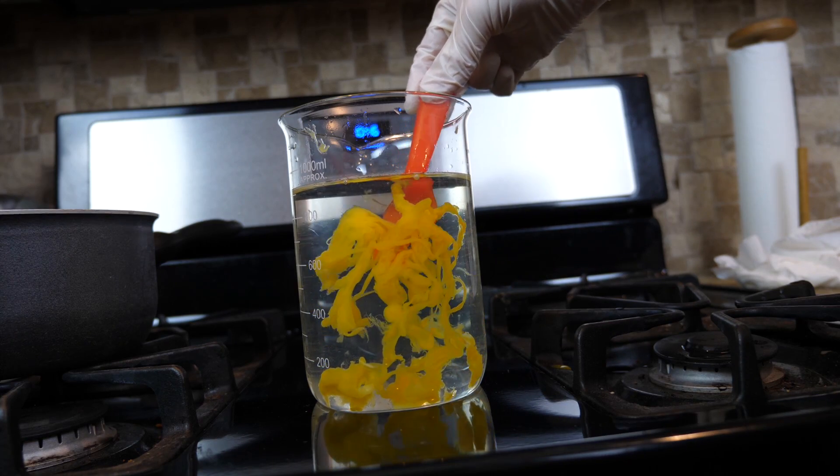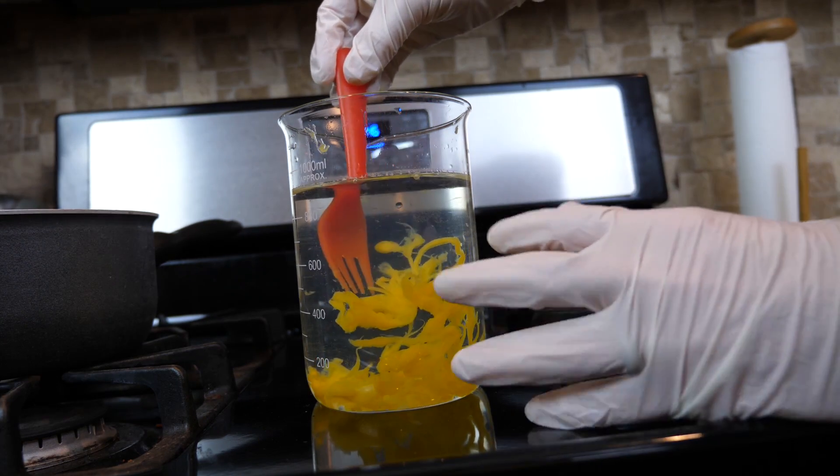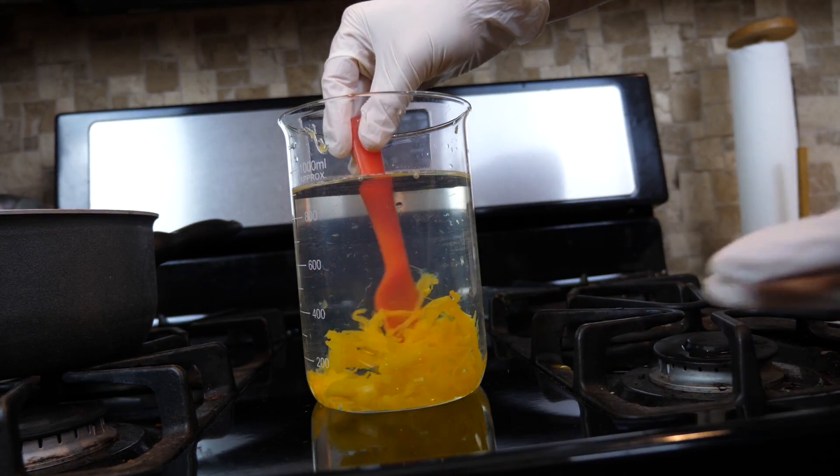But our egg yolk in the potassium hydroxide here stays together in one big clump. That's because it's been denatured and all of those long strings are now sticking together.